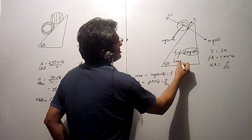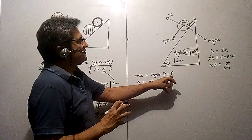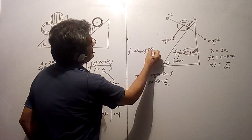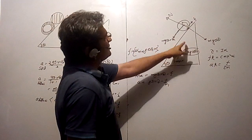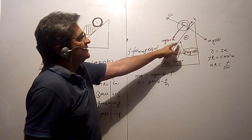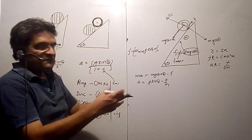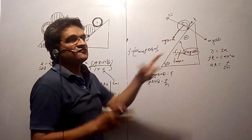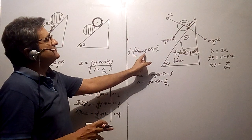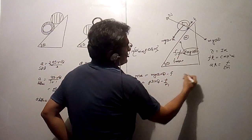In pure rolling, the body does not use the maximum frictional force — it only uses the minimum f required. The value μmg cosθ is the maximum friction this surface can provide, but in pure rolling only the required f is used. So never use f = μmg cosθ in pure rolling cases — use f as the minimum friction required for pure rolling down or up the inclined plane.